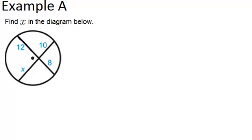So each of these are chords. The relationship here is that the two segments on the same chord, if you take the product of them, that will be the same product as the two segments on any other chord. So that means in this case, 12 times 8 is the same as 10 times X.